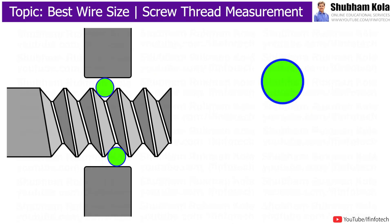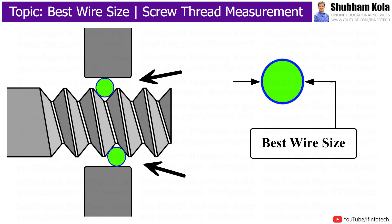So we use wires, and the diameter of wires which we are going to select is the best diameter of wire. We cannot use any random diameter of wire. We need to know how much diameter of wire should be placed in V-groove of a given screw thread.